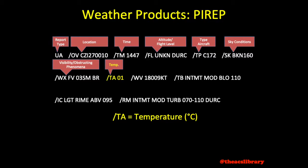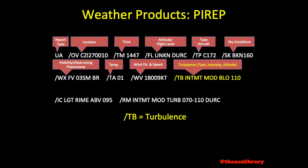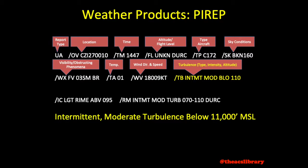Temperature may be reported in degrees Celsius and is coded /TA. Wind, coded /WV, is found in the familiar format of a three-digit heading followed by a two- to three-digit speed, followed by KT for knots. Turbulence encountered may be coded /TB followed by a description of the intensity, type, and altitude.